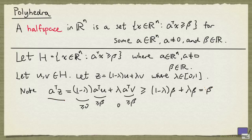So A transpose Z is at least beta, hence Z is in H, implying that H is convex.